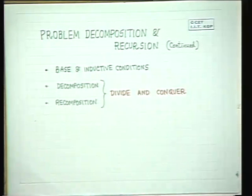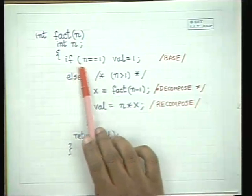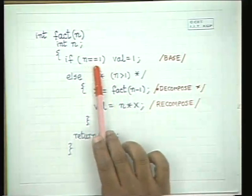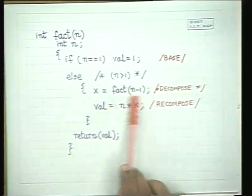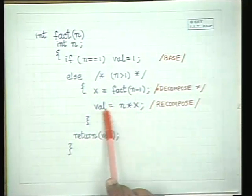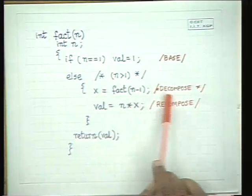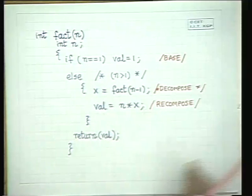We saw several simple examples informally, and we will quickly go back to a more reasonably written version of those examples. The first was the simplest one — the factorial program — where the base condition was when n is equal to 1 the value is 1, otherwise the decomposition is factorial of n minus 1, and the recomposition was n multiplied by the return value of factorial.